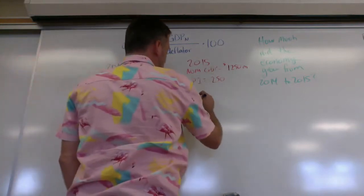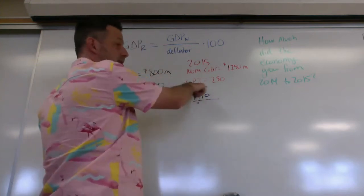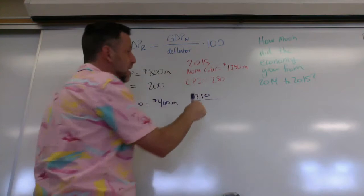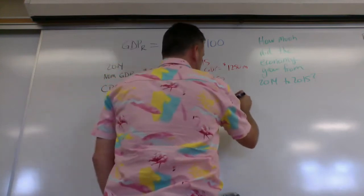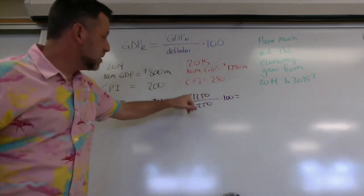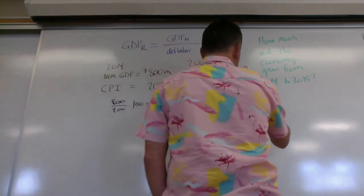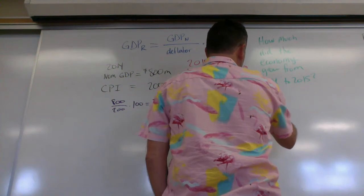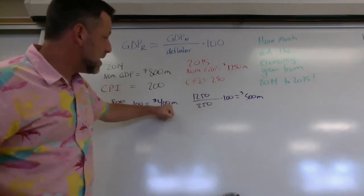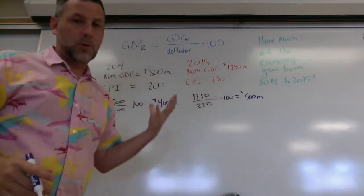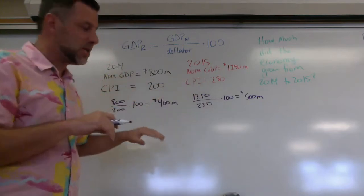So I've got my nominal GDP 1250 divided by my deflator. So prices have gone up, right? We've got some inflation here. So we have 250 goes in here times 100. 250 goes into 1250. It goes in there five times, five times 100 is 500. So we end up with 500 million. So we can see the economy has grown. My real GDP has gone up. So that means my economy has grown. We're producing more. Prices have also gone up, but now we've taken that part out of the equation.